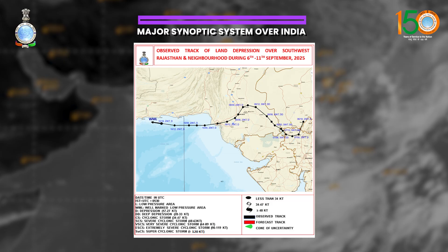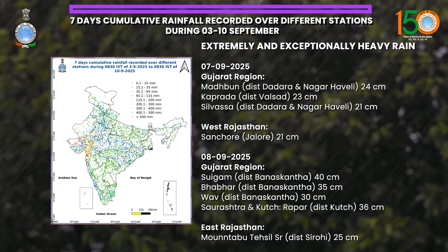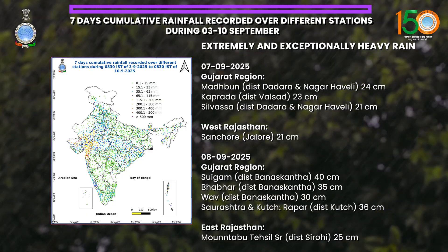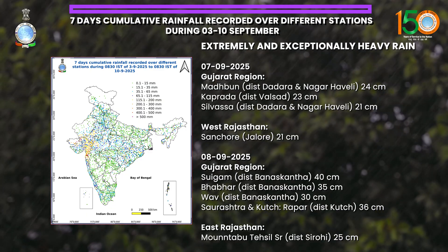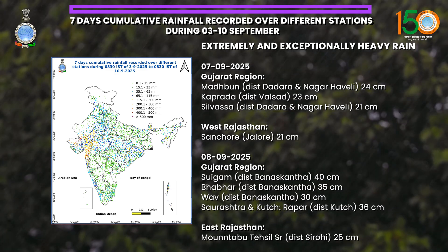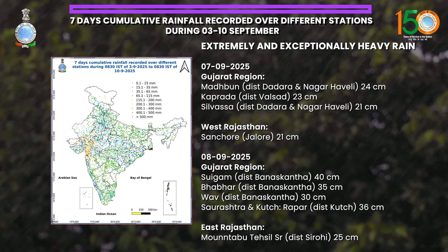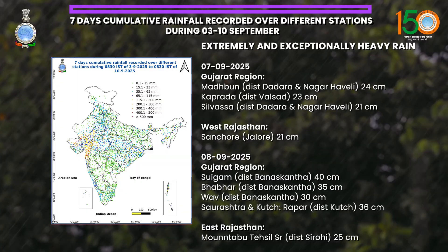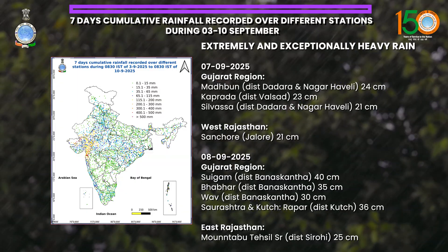In this map you can see that under the influence of this deep depression, the areas of south Rajasthan, West MP and Gujarat state received very heavy to exceptionally heavy, and very heavy to extremely heavy rainfall during these last 7 days, as depicted in this map.